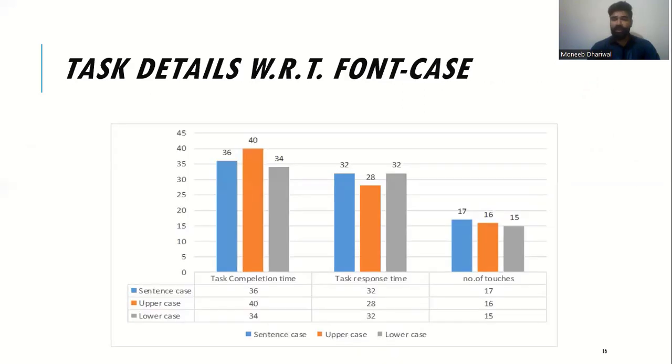The descriptive statistics of font case group as presented by the graph here shows that the task completion time of upper case is recorded as higher and for the lower case it was recorded as lowest. The data on reflection time shows the lowest response time for the upper case group. Moreover, the touch count is notably the lowest for the lower case group and higher for the sentence case group. However, the difference cannot be claimed as significant.